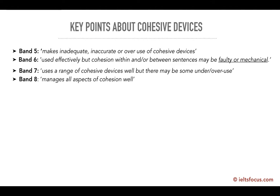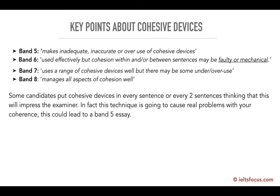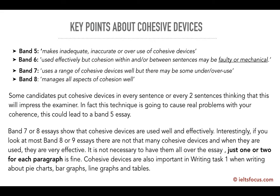That's the marking criteria. Some candidates put linkers or cohesive devices in every sentence, thinking it will impress the examiner — but actually this is going to damage your essay and you could end up with a band five. If you look at band seven or eight essays, the cohesive devices are used very effectively. At band eight or nine, there are actually not many cohesive devices, and when they are used they seem very effective. Just one or two per paragraph is fine. These are also important in writing task one — for pie charts, bar graphs, or ordering information — they come in quite handy.